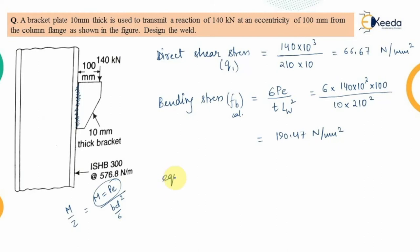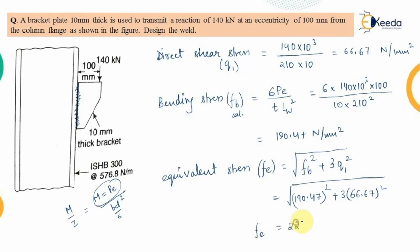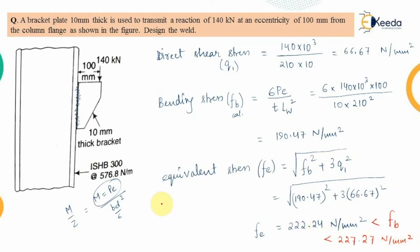The equivalent stress is FE = √(FB² + 3 × τ²) = √(190.47² + 3 × 66.67²), which comes out to 222.24 N/mm². This equivalent stress is less than the permissible bending stress of 227.27 N/mm² calculated earlier. Therefore, the groove weld connection is safe.